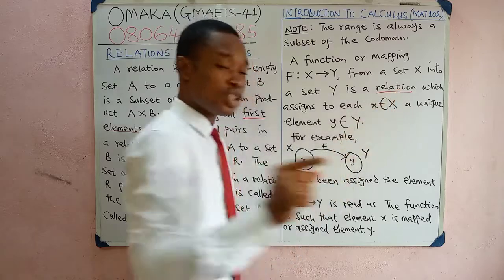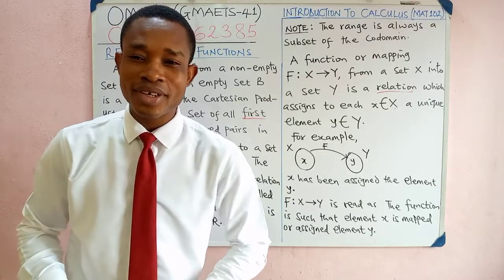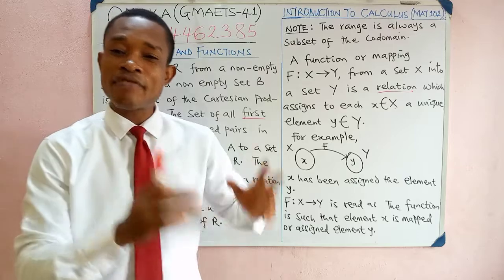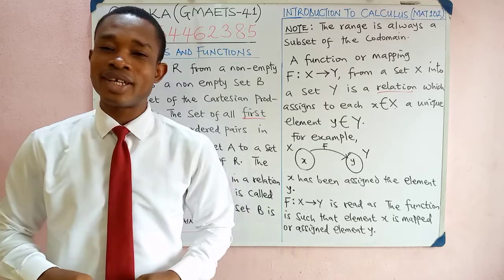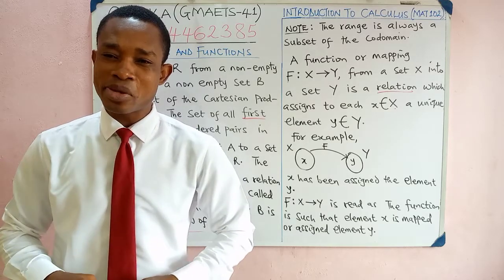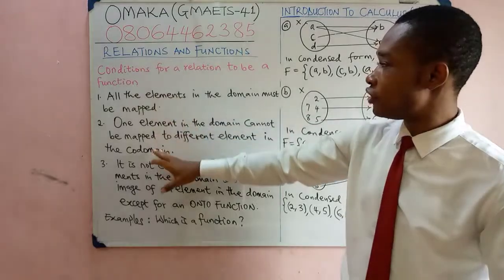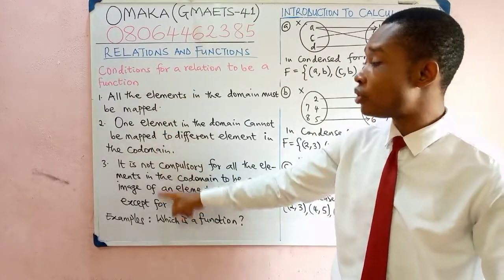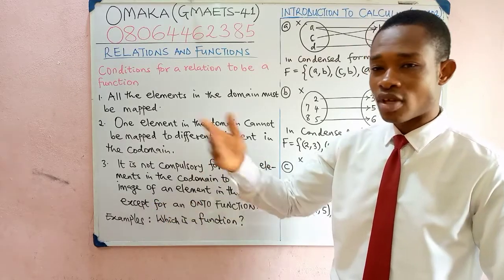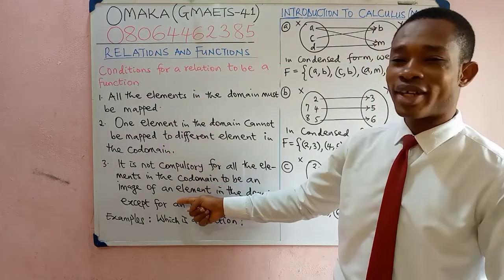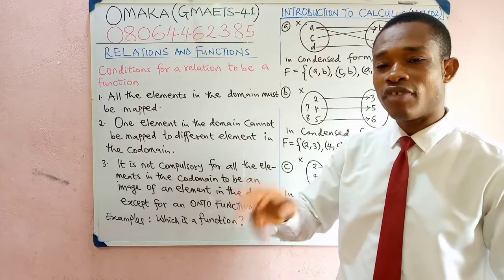Please take note that a function is a relation. So what does that tell us? All functions are relations. But not all relations are functions. So how can we identify a function? In the next video, we are going to talk about that and explain more the concepts of domain, co-domain, range, and image. On the board, we have conditions for a relation to be a function. It is important to know these three conditions, because not all relations are functions, although all functions are relations.